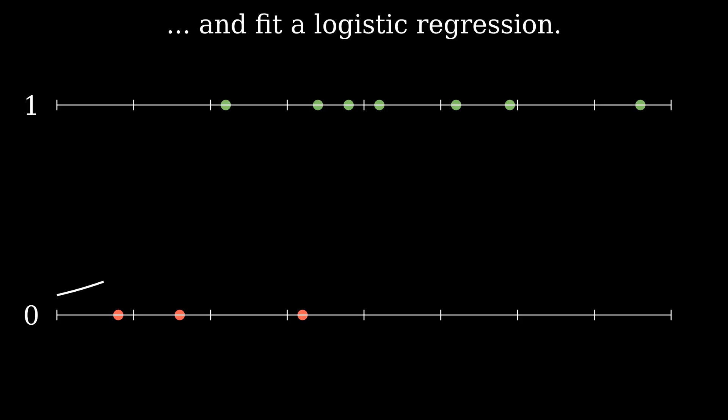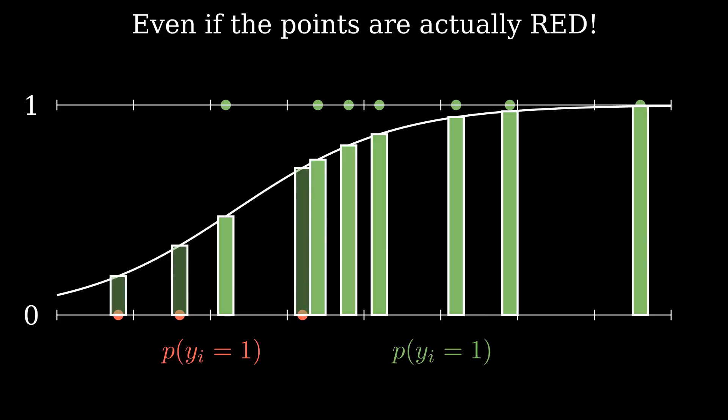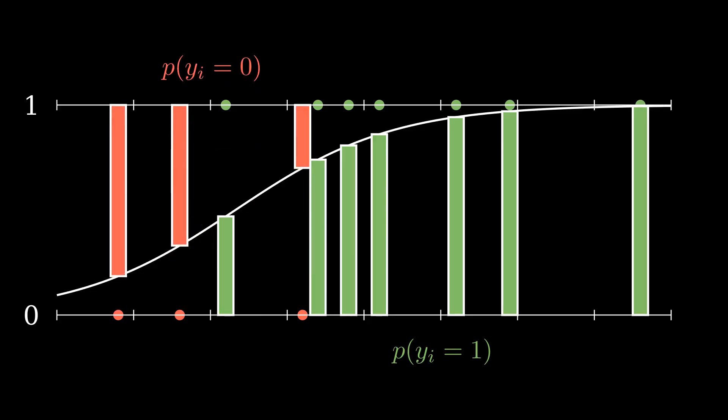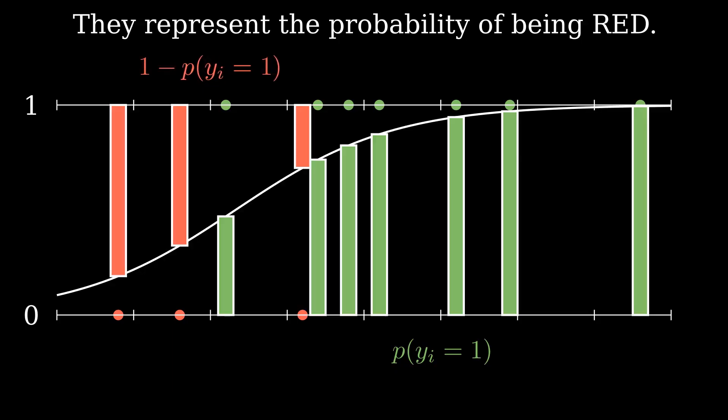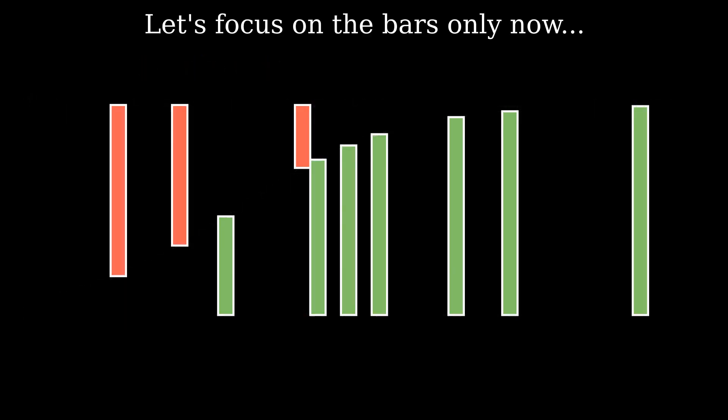Let's fit a logistic regression to these points. The bars below the curve represent the probability of a point being green, even if the points are actually red. For these points, we take the bars above the curve instead, so they represent the probability of a point being red. Now that we have the probabilities of a point being the color it actually is, let's focus on the bars only.